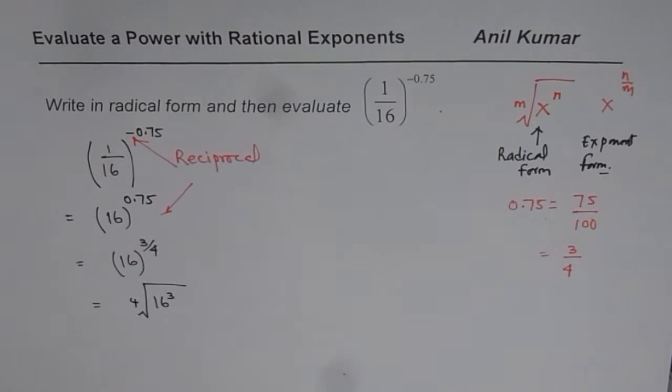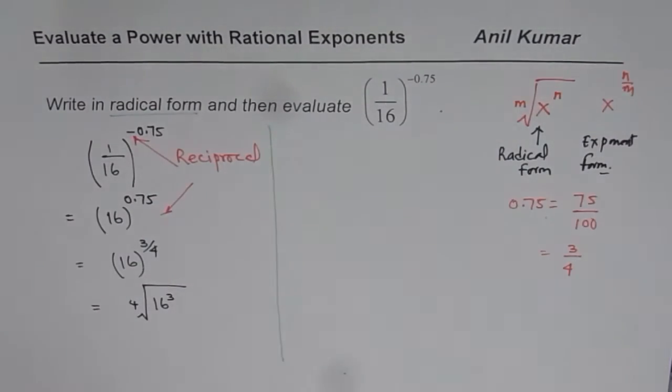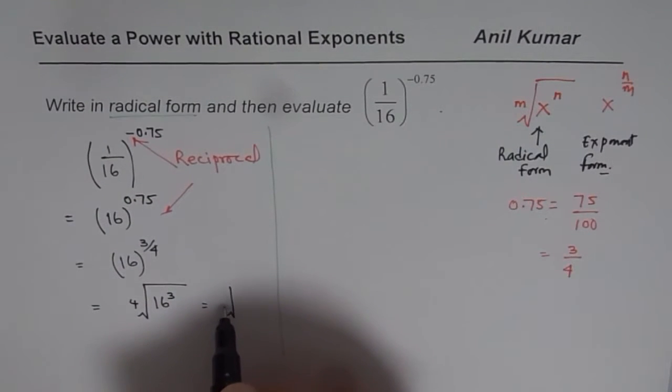We are doing 16 to the power of 3 and the fourth root. So, that becomes the radical form. Do you get the idea? That is the first part of the solution, writing in radical form. At times, you may also write this kind of like this, which is also correct.